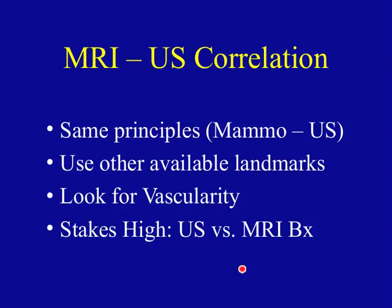Remember that the stakes are high. These are usually abnormalities that are suspicious based on the MRI, and we have to be 100% confident about the correlation. Otherwise, we really should do an MRI-guided biopsy. You need to be 100% certain because you don't want to biopsy a presumed correlate on ultrasound, have a benign result, and then have to go through all the machinations to prove that that was, in fact, the MRI abnormality.